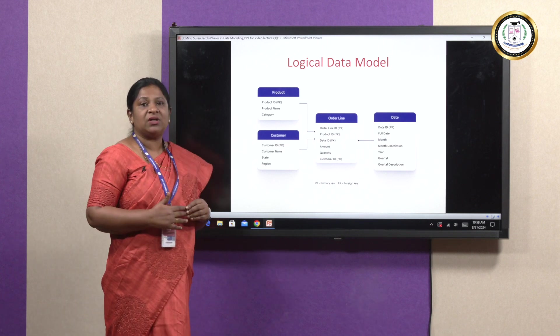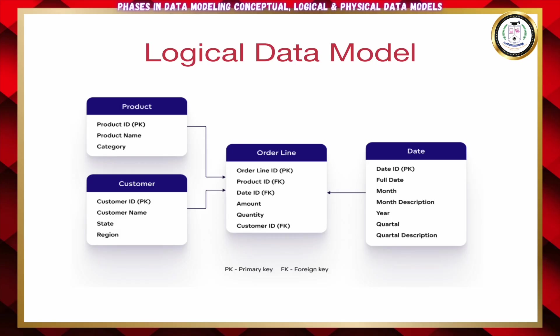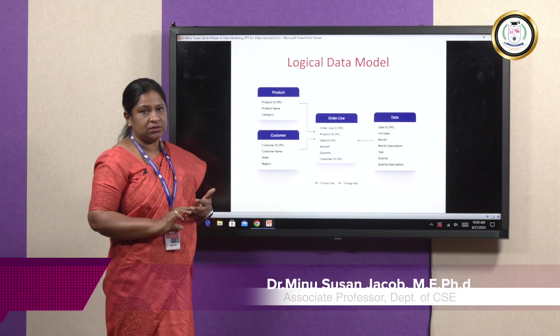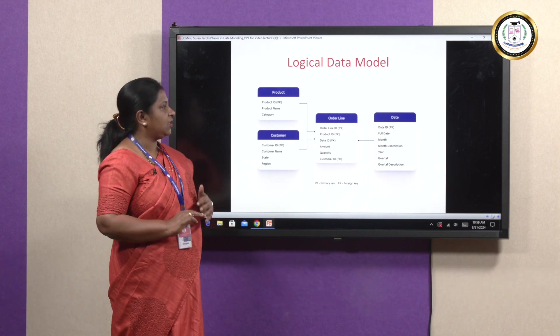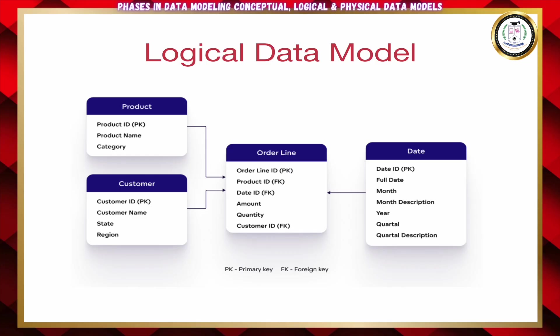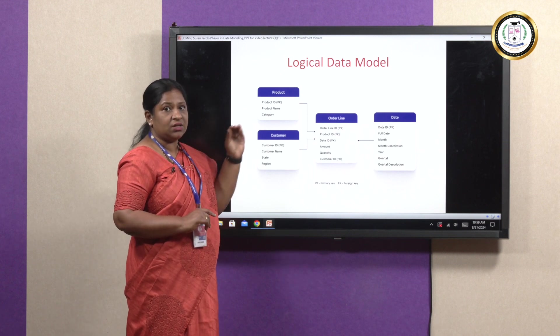When discussing attributes, there are two types: key attributes and non-key attributes. For product, product ID is a key attribute while product name and category are non-key attributes. Key attributes help you uniquely identify a particular record in the table. Similarly, customer ID is a key attribute for customer, order line ID for order line, and product ID and date ID are foreign keys referred from another table. When you develop a logical model, you add the attributes along with the table names.